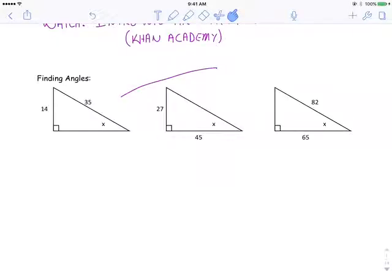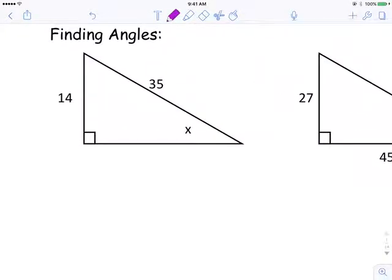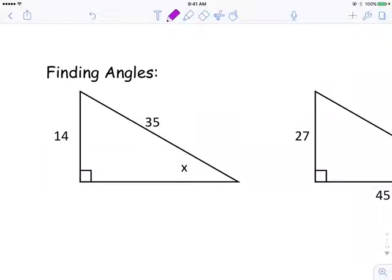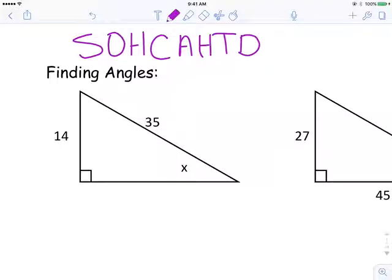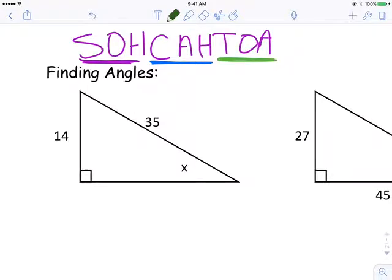Number 1, the first triangle. Something you should always remember to do is to write this acronym down so that you can see it on your page somewhere. Because this acronym tells us and defines the three Trig Ratios for us. Sokotoa, sine of an angle is equal to opposite over hypotenuse. Cosine of an angle is equal to adjacent over hypotenuse. And tangent of an angle is equal to opposite over adjacent. Those are the three Trig Ratios.